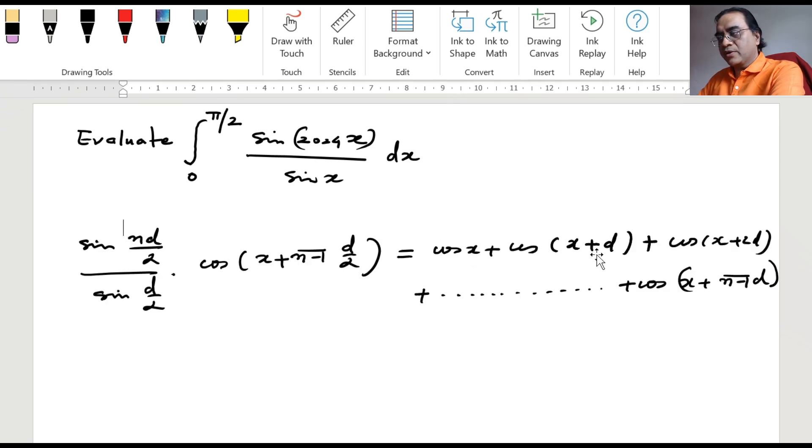Cos x plus cos x plus d plus cos x plus 2d and so on up to cos x plus n minus 1 times d. This gives us sin n d by 2 divided by sin d by 2, or sin nx by sin x type of pattern, which is what we need here.